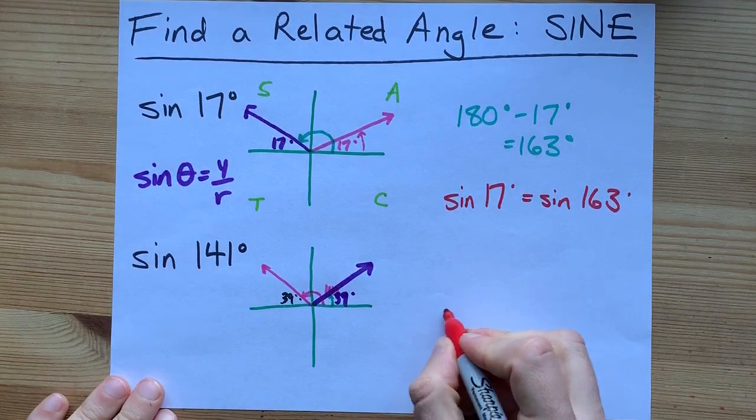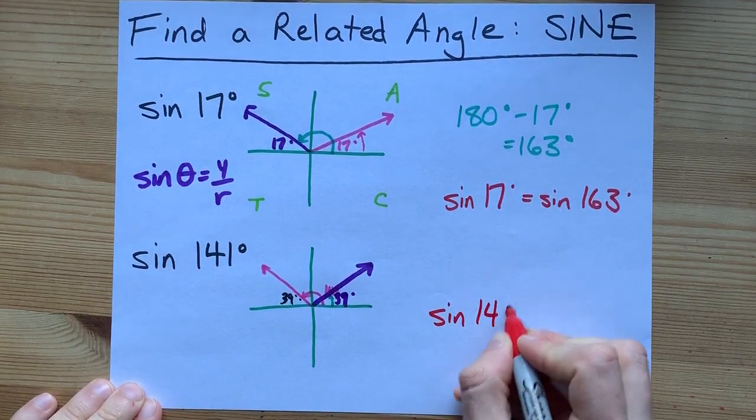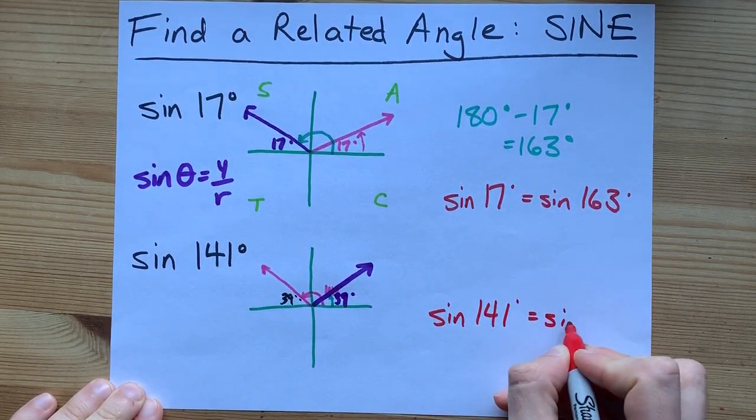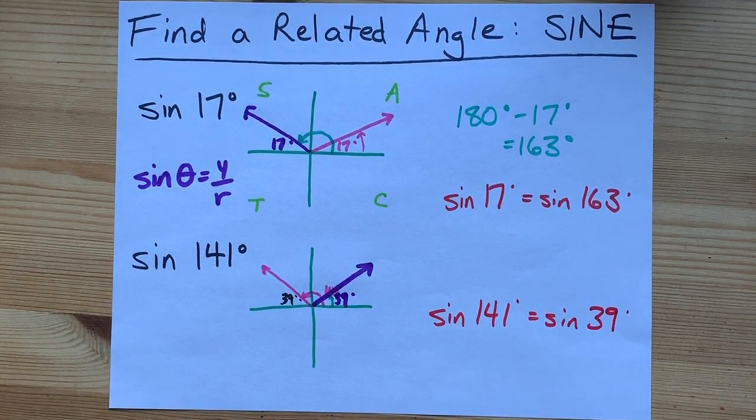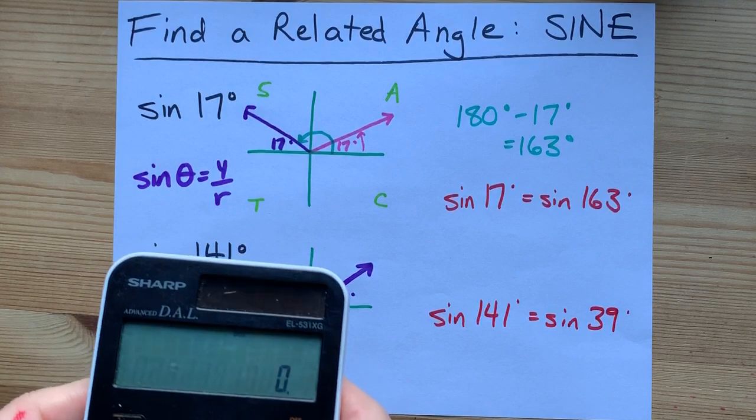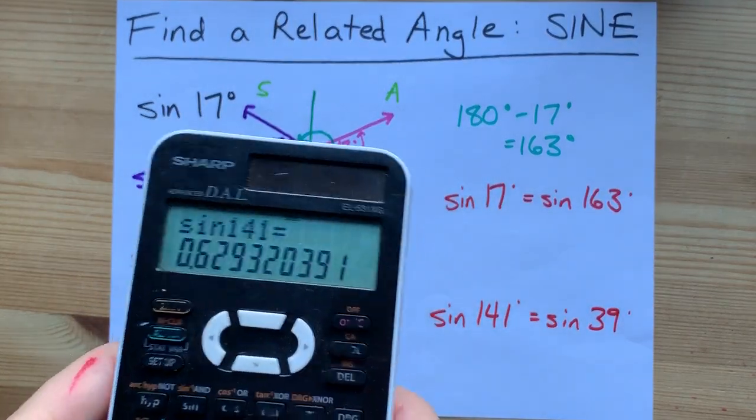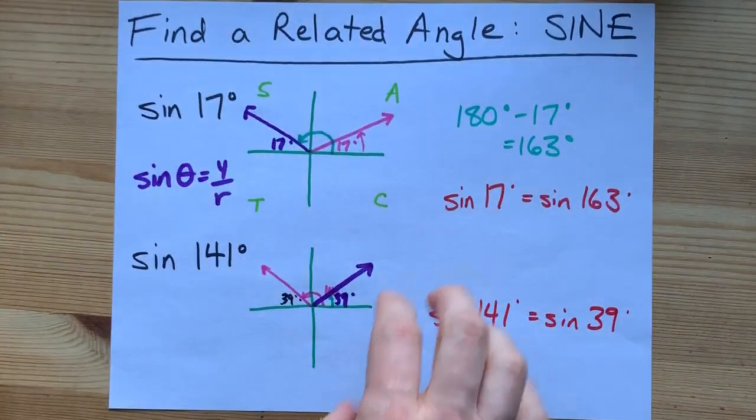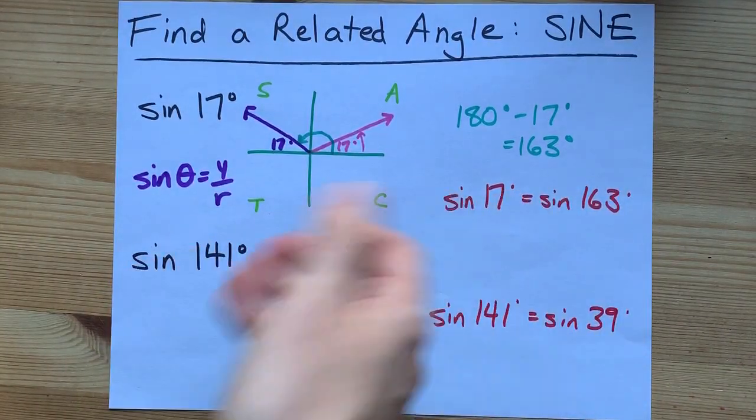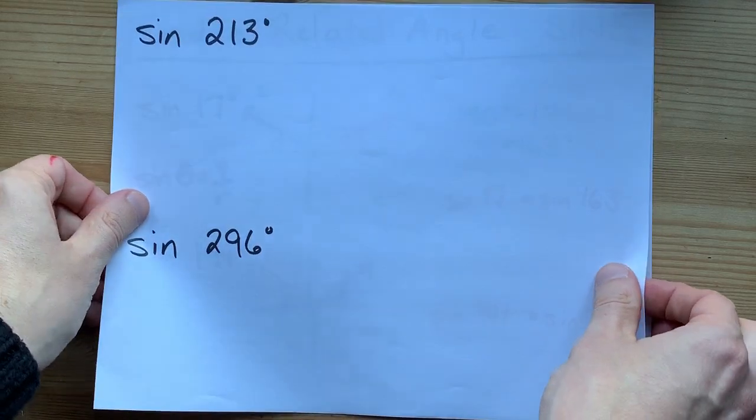Your final sentence here: sine of 141 degrees equals the sine of 39 degrees. Do you want to check that on your calculator just to be sure? Sine 141. Sine 39. Oh, it's the same number. I'm a genius. Come along for the next genius ride.